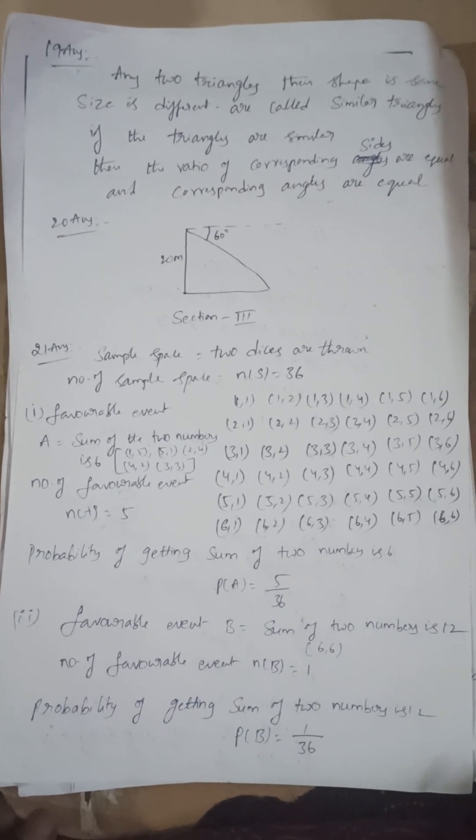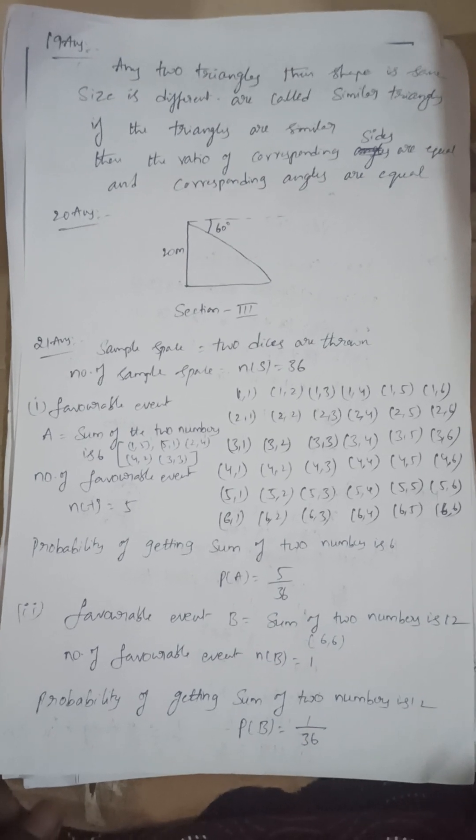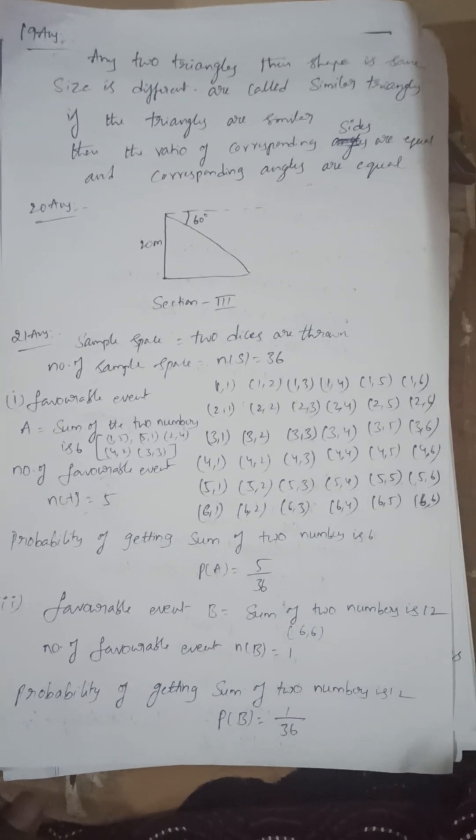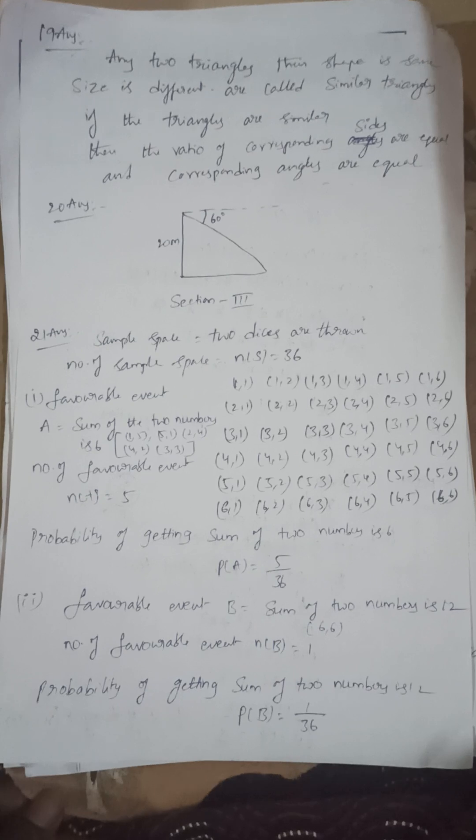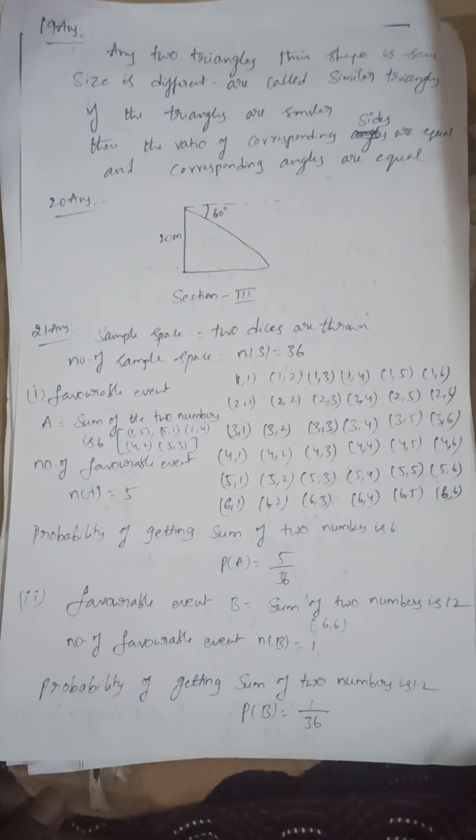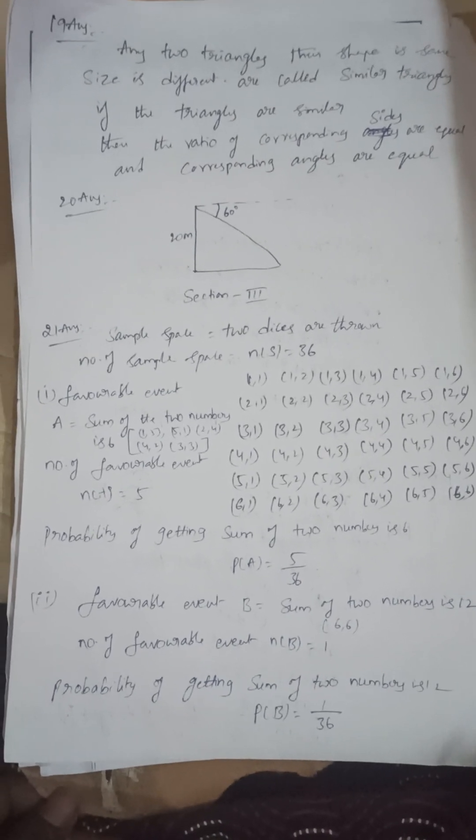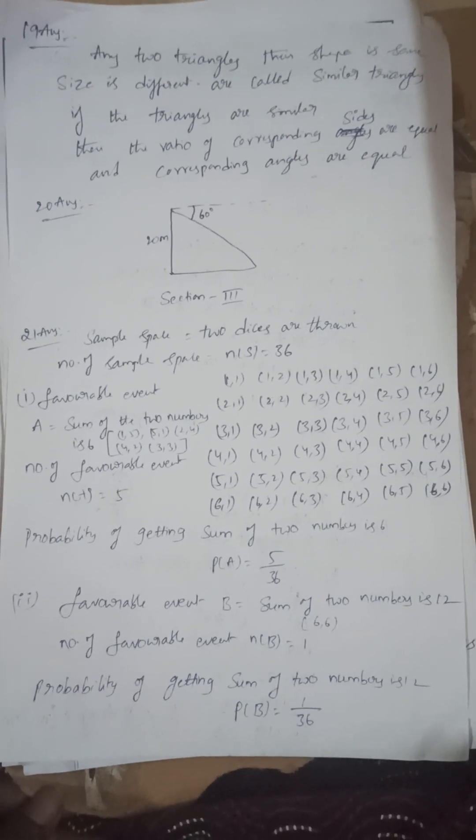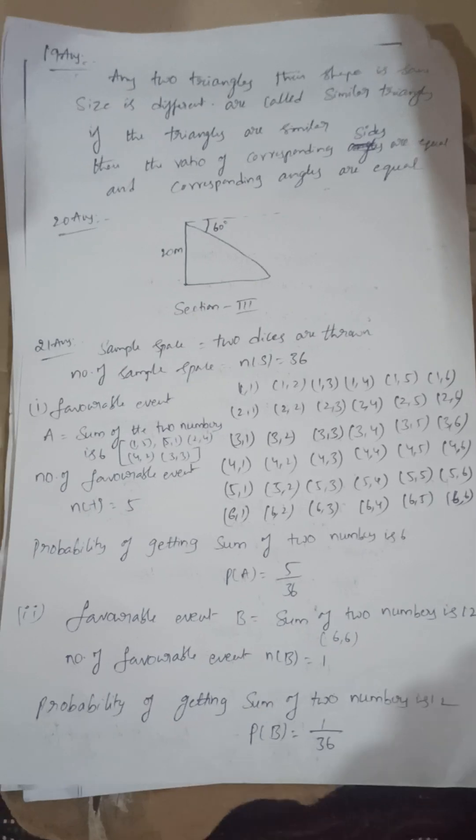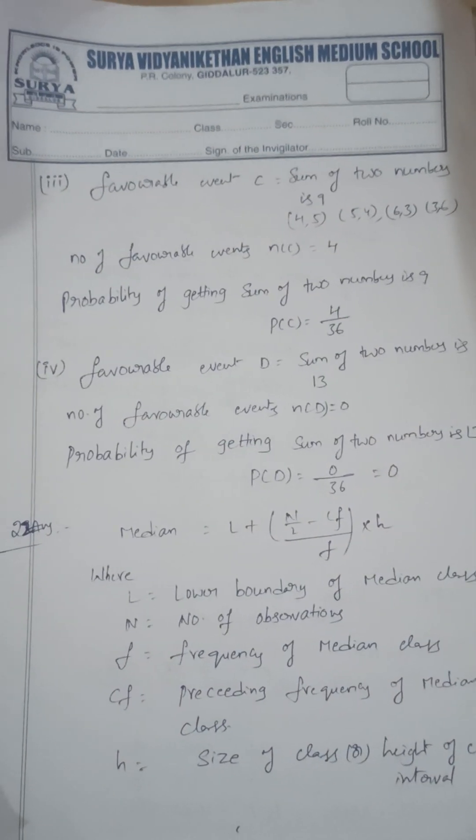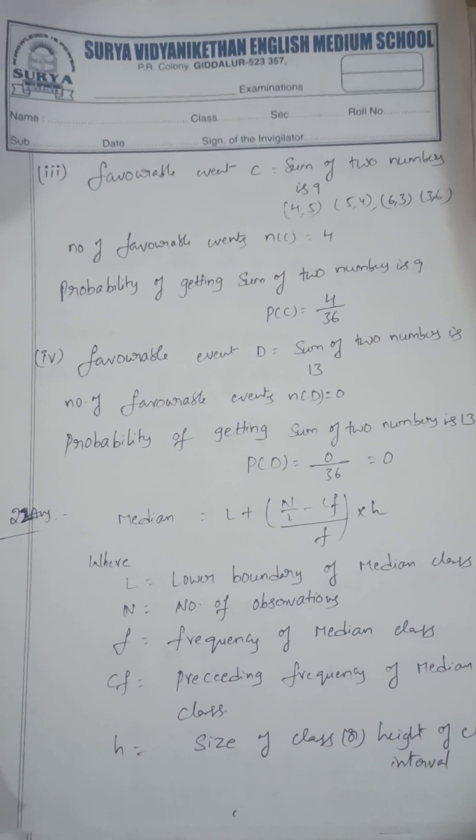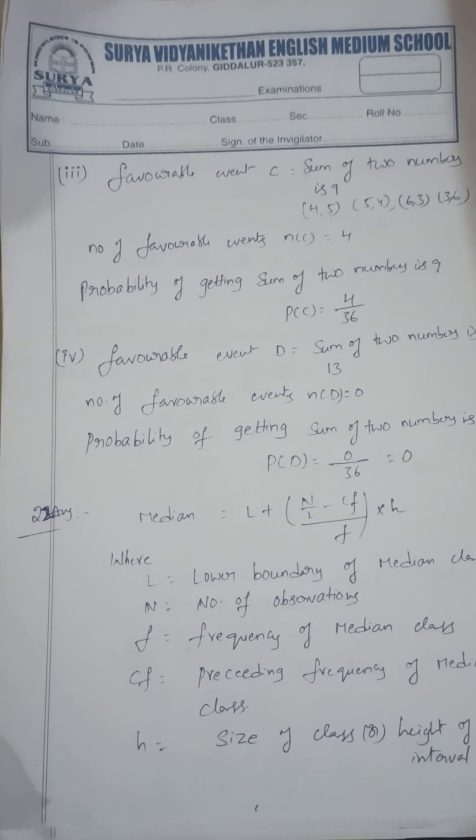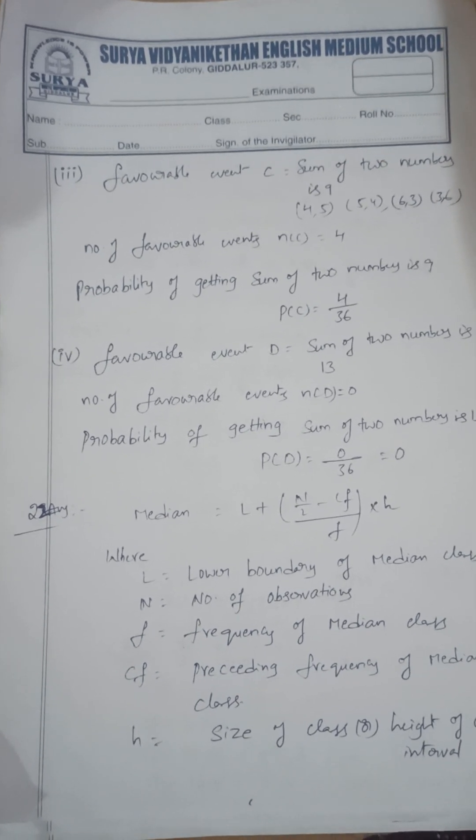Next, 21: two dice are thrown, so total chances is 36. First one, favorable event A is the sum of the two numbers is 6. How many chances? 5. So probability is 5 by 36. Sum of two numbers is 12, 1 chance, 1 by 36. Next, sum of two numbers is 9, 4 chances, so probability is 4 by 36. Sum of two numbers is 39, there is no chance, that is 0 by 36, equal to 0.